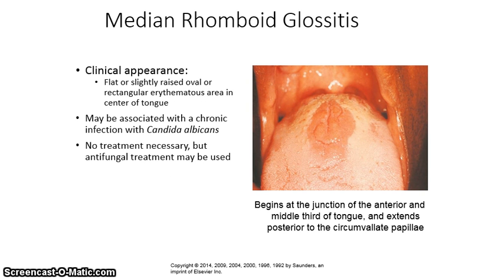Median rhomboid glossitis is a flat or slightly raised oval or rectangular erythematous area in the center of the tongue. It may be associated with a chronic infection with Candida albicans, which is a fungus. No treatment is usually necessary, but antifungal treatment may be used. If it is due to Candida, the patient should be advised to eat yogurt and take acidophilus to replenish the friendly bacteria in the intestinal tract. The picture on the right shows the rhomboid glossitis beginning at the junction of the anterior and middle third of the tongue and extending posterior to the circumvallate papillae.